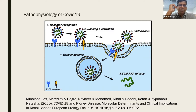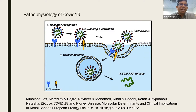Along with ACE2, we have TMPRSS2 — the transmembrane serine protease 2 — and a combination of these allows COVID-19 to get into the cell. Once the virus has gotten in and fused to the membrane, the viral RNA is released. There is a process of translation and replication and back to translation again, where the cell is now triggered to produce the very same capsules, spike proteins, and RNA through the endoplasmic reticulum.